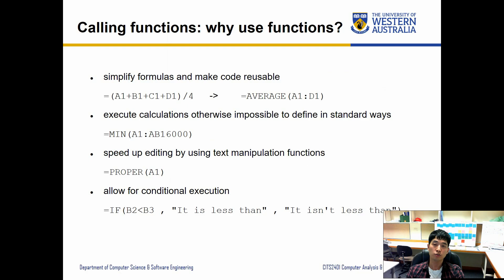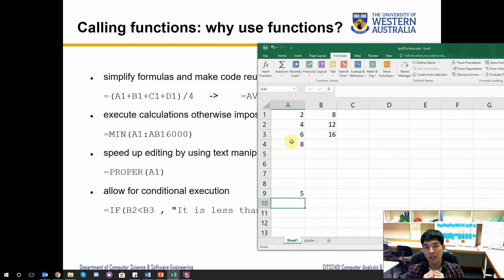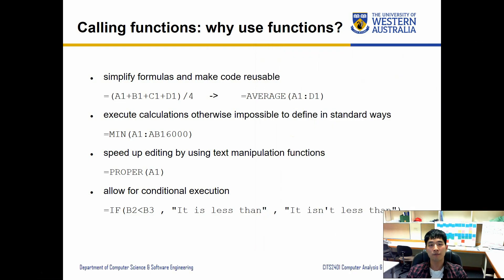So why do we want to use functions? Well, it simplifies formulas and makes code reusable. For instance, let's try to find the average of the values inside our cells over here. Rather than trying to add them up together and then divide by four, simply using an AVERAGE function makes it much more easier and clearer. Execute calculations otherwise impossible to define in standard ways as well.